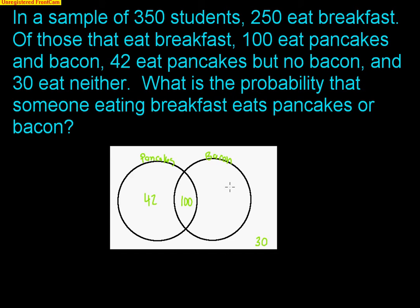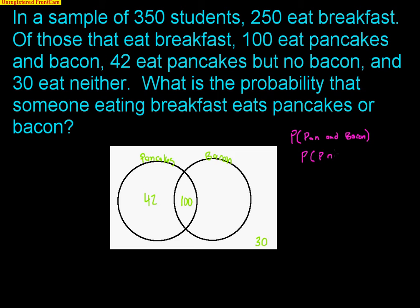The first thing is, how can we figure out what is left for the kids that eat only bacon? Let's make a list of what we know. The probability that you like pancakes and bacon — the probability of pancakes intersect bacon — is 100 students out of 250 that eat breakfast.